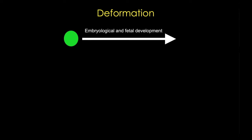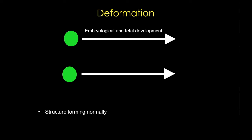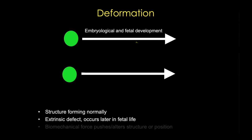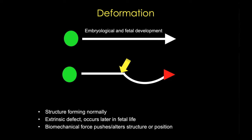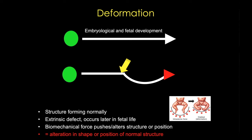Next up, we have deformation. Here we see a normal primordium and the structure seems to be forming pretty normally. But there is now some kind of extrinsic defect that usually happens later in fetal life, generally speaking after organogenesis, where some kind of biomechanical force is going to alter the structure or the position of the organ. The end result is an alteration in shape or position of that normal structure. One example is intrauterine force that results in club foot, or the flattening of the face seen in Potter sequence, where there is too little amniotic fluid.